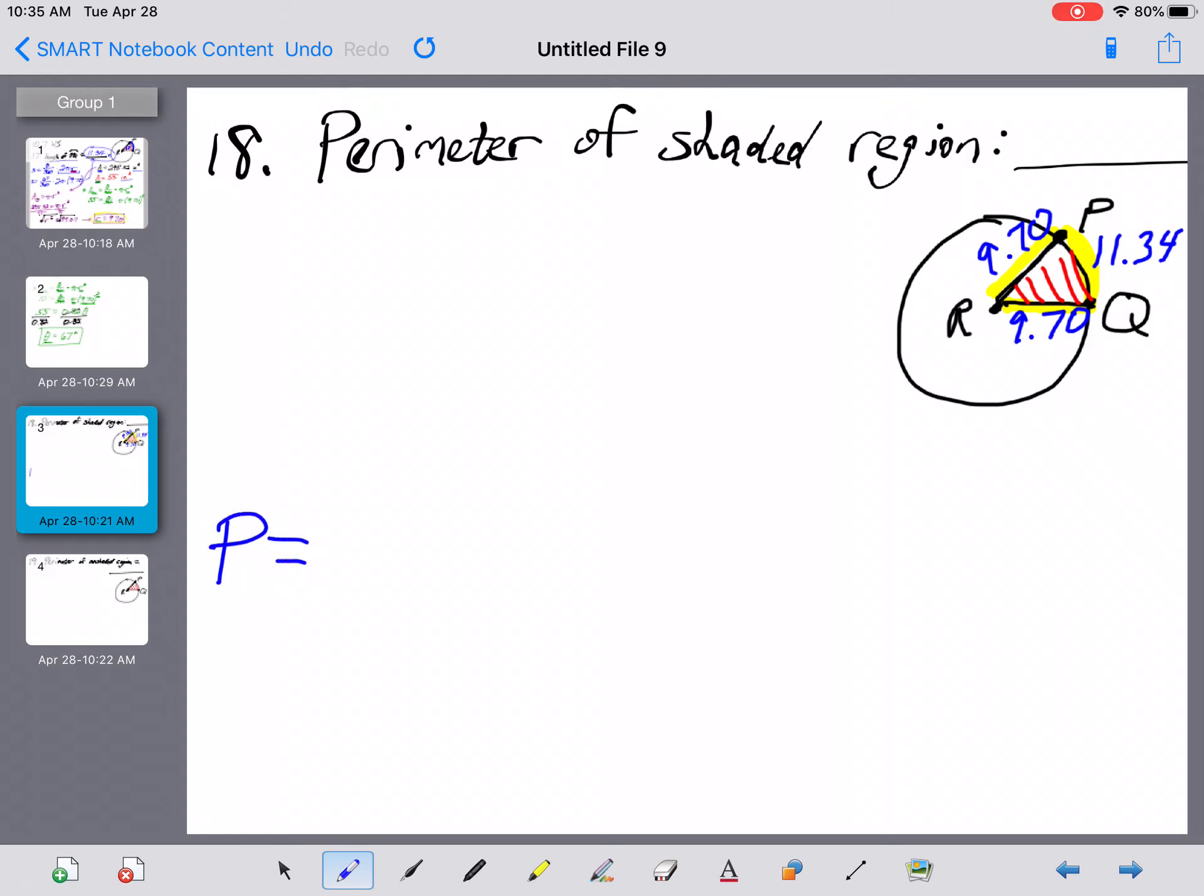So for 18, our perimeter is going to be the 11.34 that we came up with for the measure of the arc, and I'm going to add to that the two radii. So I'm going to multiply 2 times 9.70, and there's the three things that we needed, the one arc length and the two radii right there.